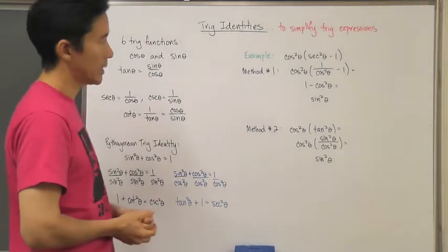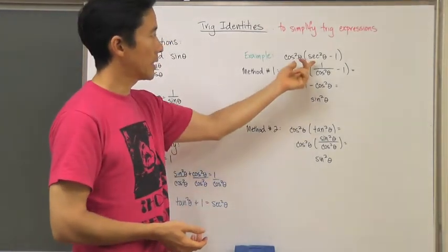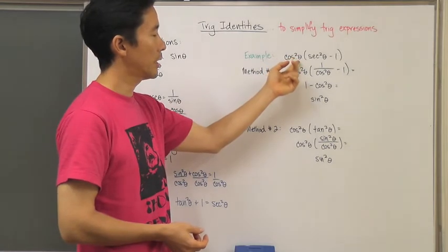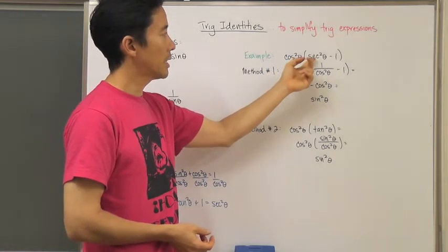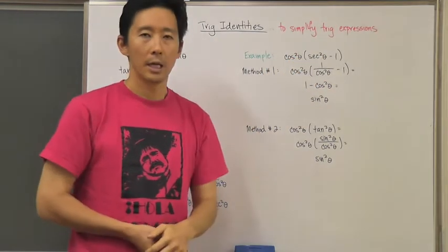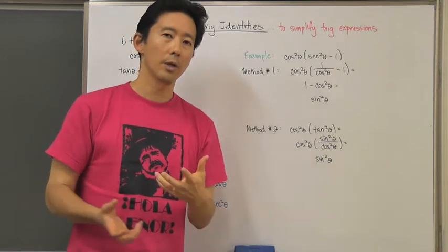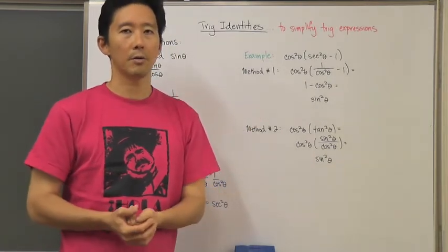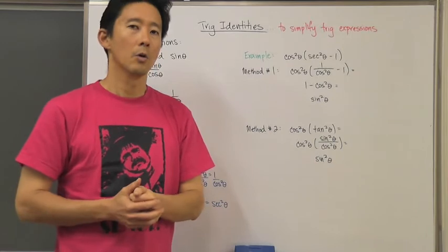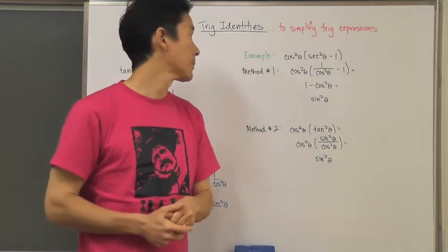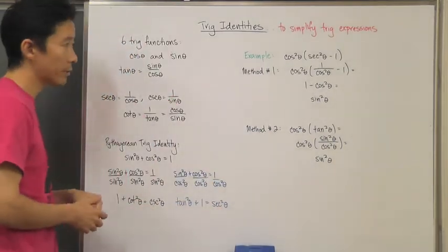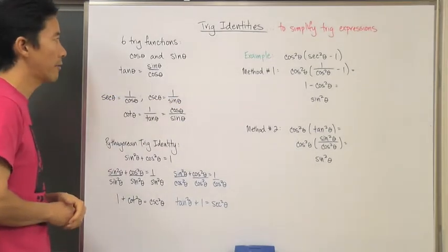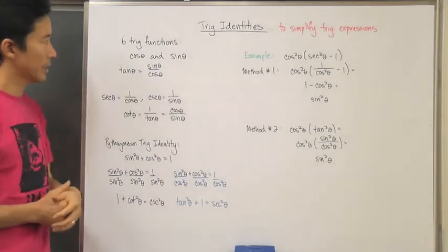Here's an example: say you have cosine squared of theta times the quantity secant squared of theta minus one. If we wanted to simplify that, is there an easier way to write that expression? Before we look at the two different methods, let's take a look at the six trig functions.